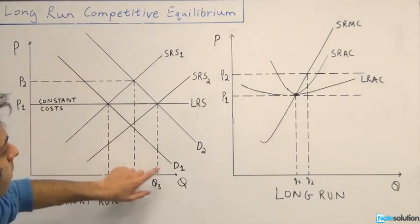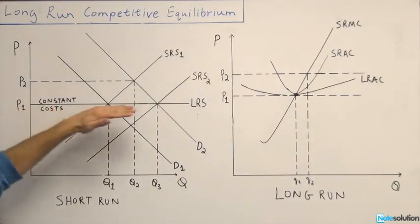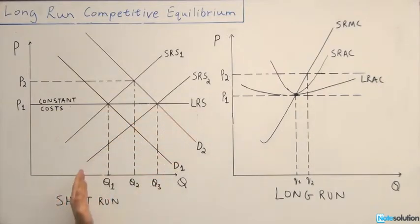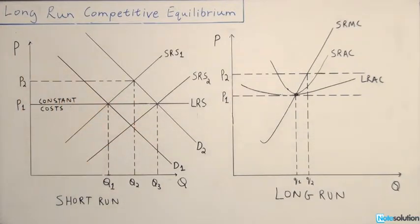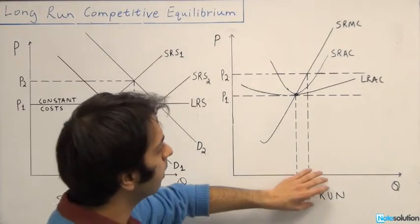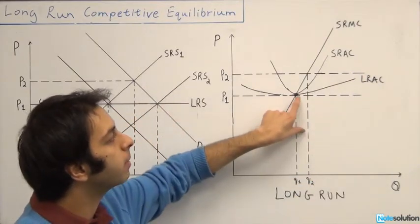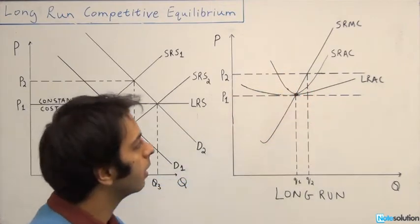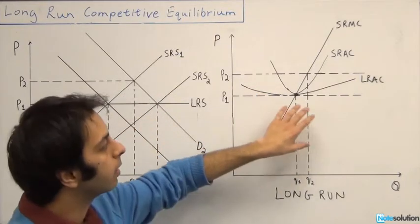Demand slopes downward and short-run supply slopes upward. The only catch is that since it's a constant cost industry, the long-run supply curve will be a flat horizontal line — meaning no matter how many firms or how much output, costs will be constant in the long run. The long-run average cost curve is comprised of the minimum points of all the short-run average cost curves, so there are many short-run average cost curves whose minimum points generate the long-run average cost curve.